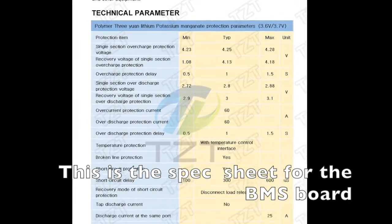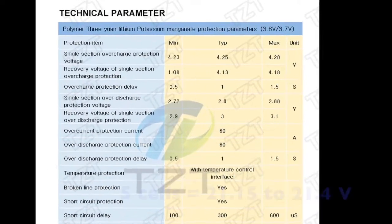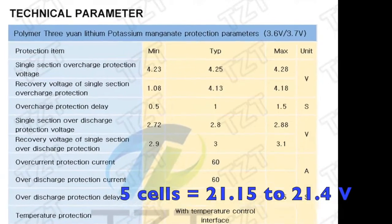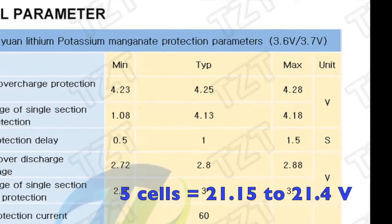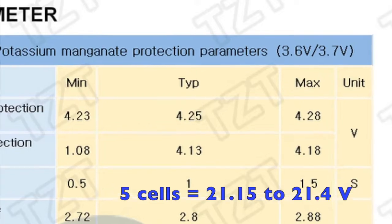This is the spec sheet for the BMS board. So 5 cells will equal 21.15 to 21.4 volts.